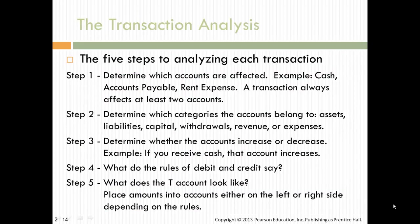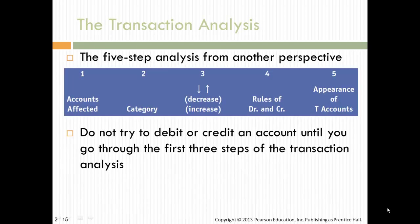There are five steps to analyzing a transaction. First, determine which accounts are affected. Second, determine which categories the accounts belong to — asset, liability, capital, etc. Third, determine whether the transaction is increasing or decreasing an account. Fourth, apply the rules of debit and credit. Fifth, determine what the T-account looks like. This five-step analysis process gives you another perspective, and this slide is worth putting on a flash card.